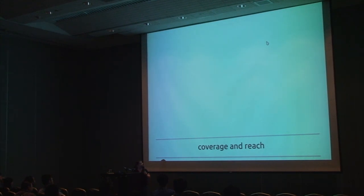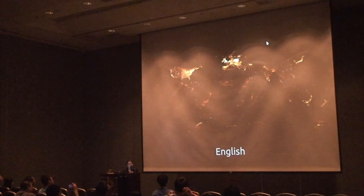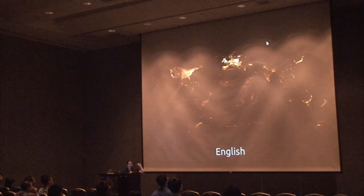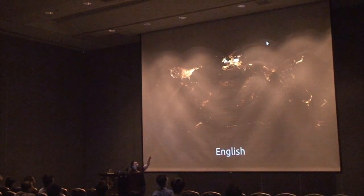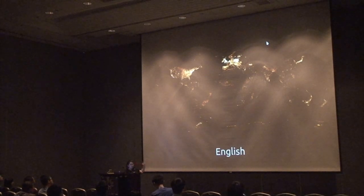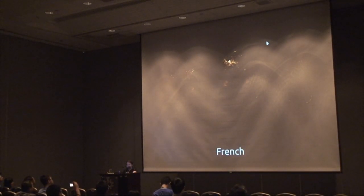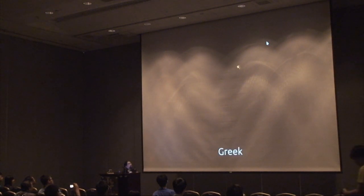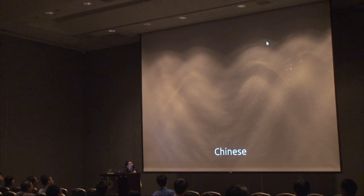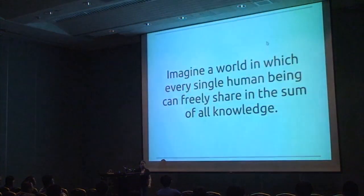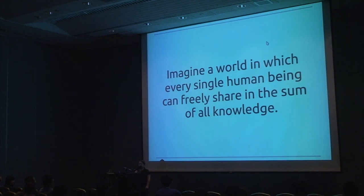And the last problem is coverage and reach. This is a map of all the geotagged articles on the English Wikipedia — if there is an article on Taipei, there is a dot where Taipei is. You can see a pretty good picture of the world. But if you look at the French Wikipedia, you already see less. Italian, a little bit less. And then Greek, Turkish, Chinese — this is pretty depressing, because it means we are not reaching our goal of providing access to all human knowledge to everyone.